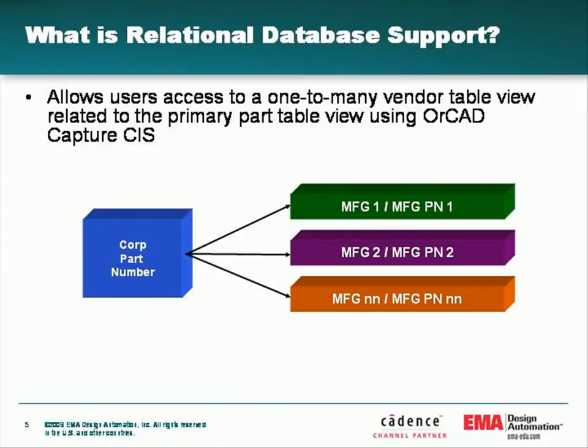With the introduction of relational database support in ORCAD Capture CIS, the user can now view multiple associated relational records for one selected part. For example, the user can select a corporate part number in ORCAD Capture CIS Explorer and find any associated manufacturers or manufacturer part numbers in another table.